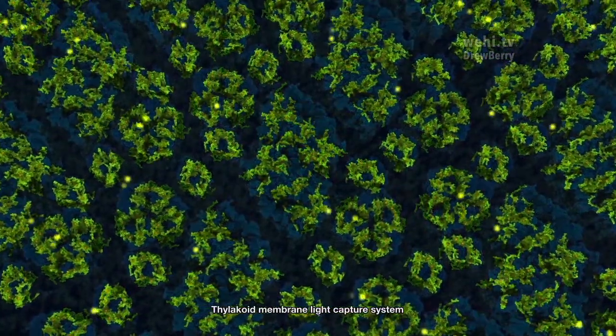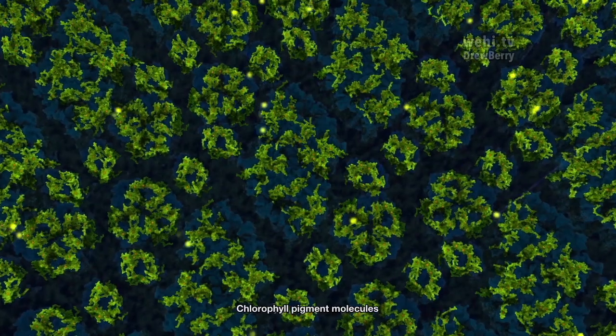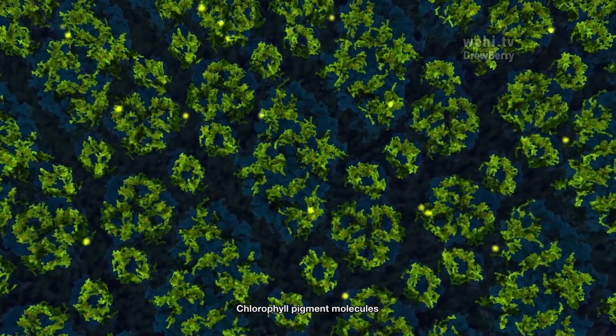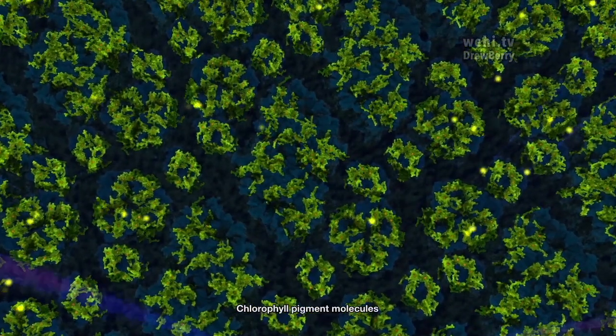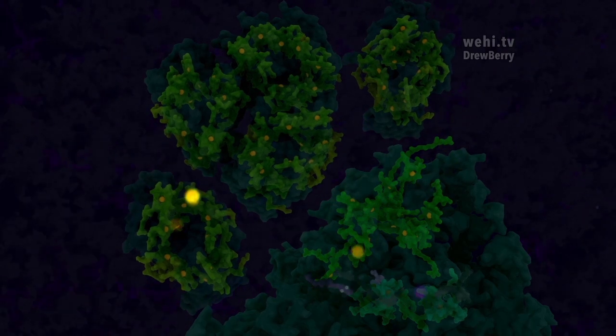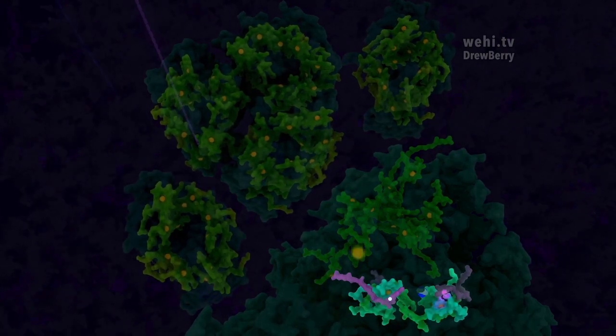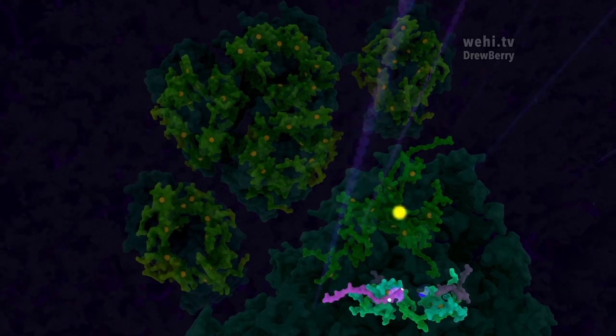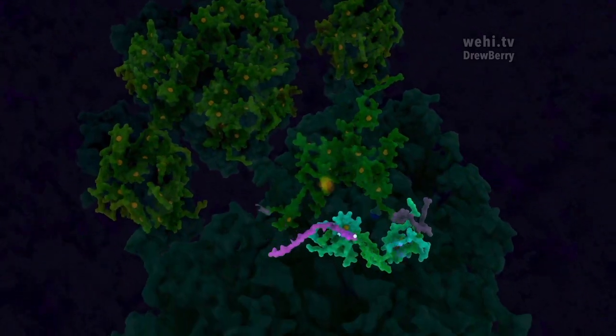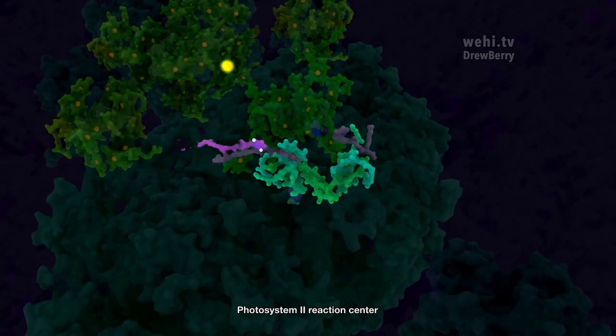The photon capture system is formed out of precisely arranged chlorophyll pigment molecules. Chlorophyll can absorb the energy of a blue or red photon and pass the energy via quantum mechanical effect through a chain of pigment molecules to a photosystem II reaction center.